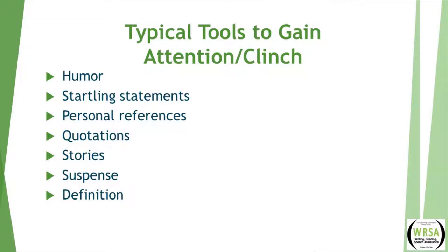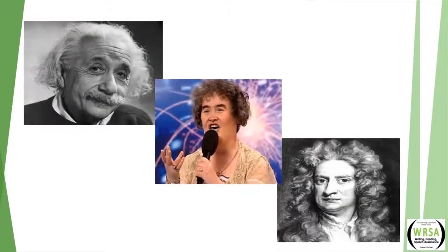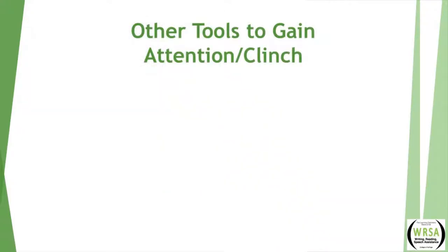The last item on my list is the last because I think it's the weakest and the most overused — the idea of using questions as an attention getter. Here's an example: 'What do Albert Einstein, Susan Boyle, and Isaac Newton all have in common? They all have really amazing hair, and they are all very talented, but you might be surprised to know they all have some form of autism.' This is a fair way to get our attention, but later I'll show you a significantly better way to introduce a speech on autism. I encourage you to consider other options.